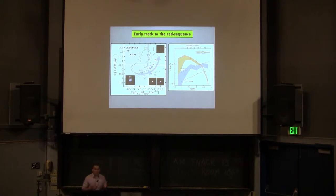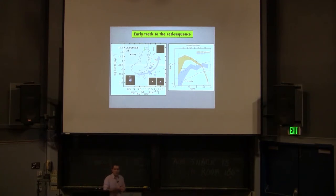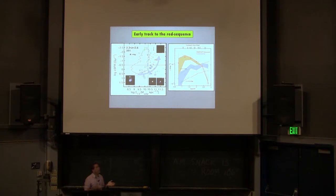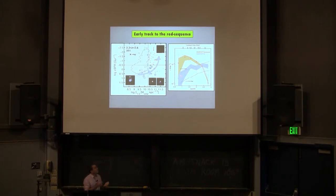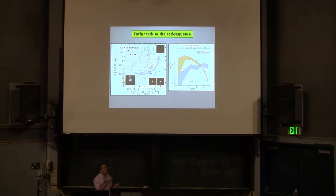Looking in more detail at the number density of both populations with time, we show a diagram in red of the evolution of compact quiescent galaxy number density, which grows very rapidly from redshift 3. We argue this population is the result of the quenching of compact star-forming galaxies, and we can play a simple game: the red line is the cumulative distribution of the blue line representing compact star-forming galaxy number density.